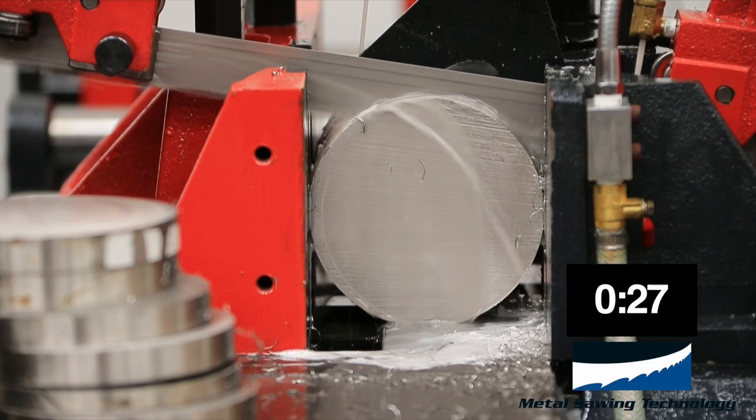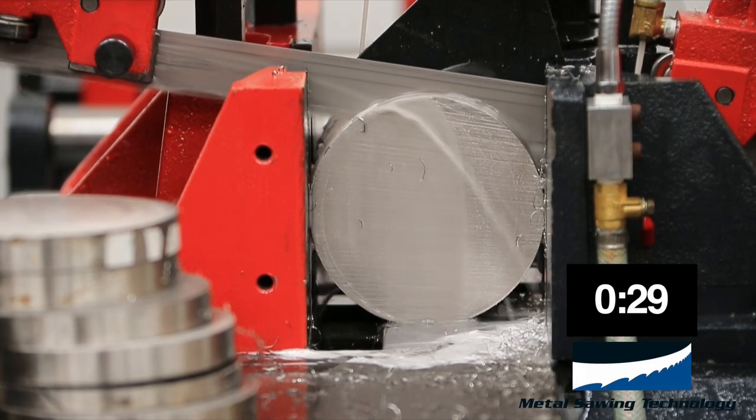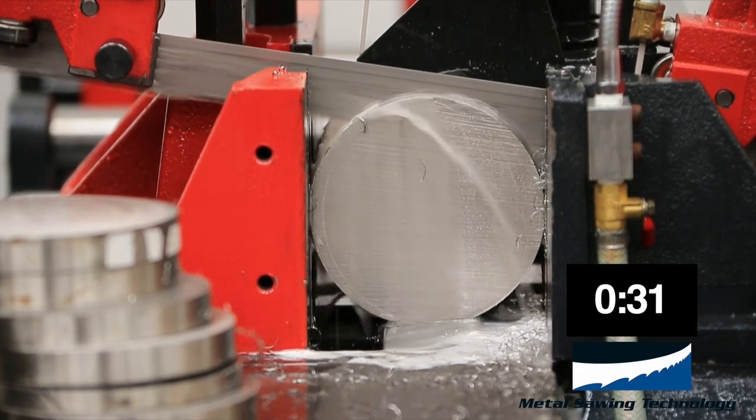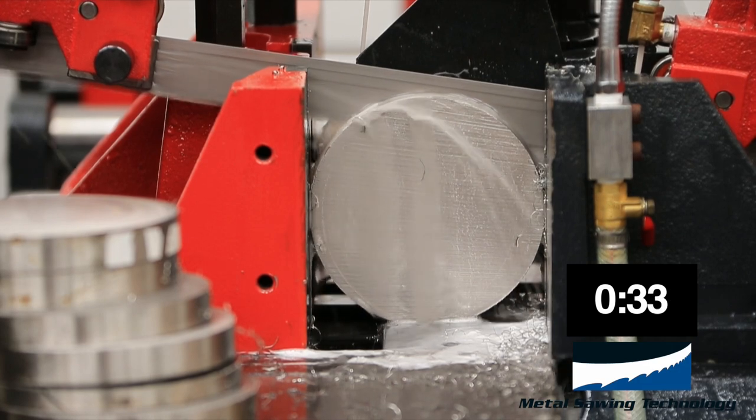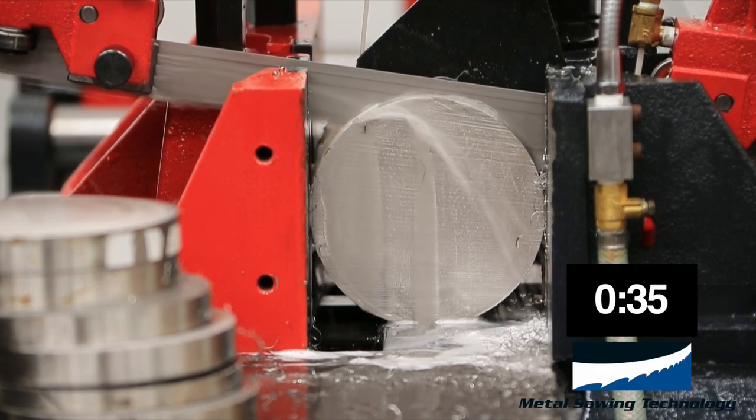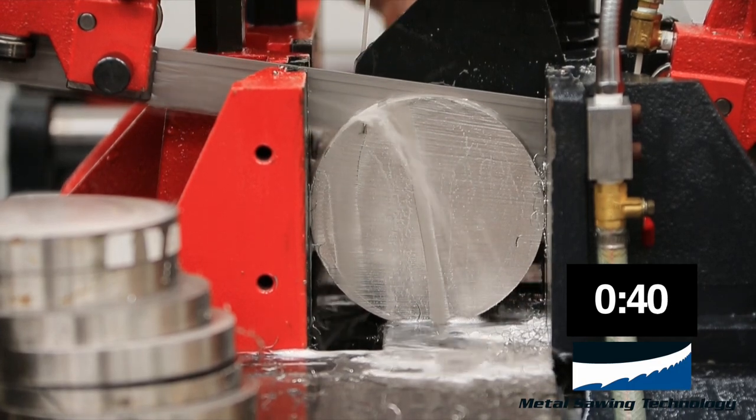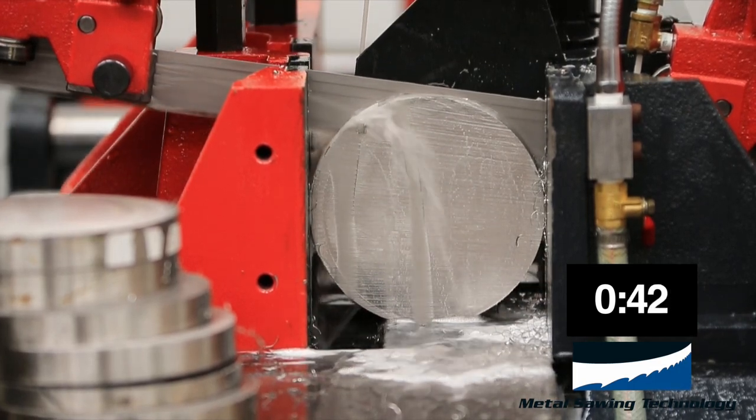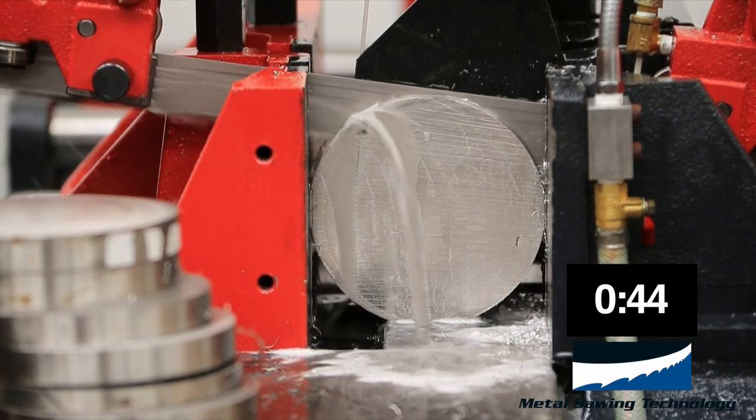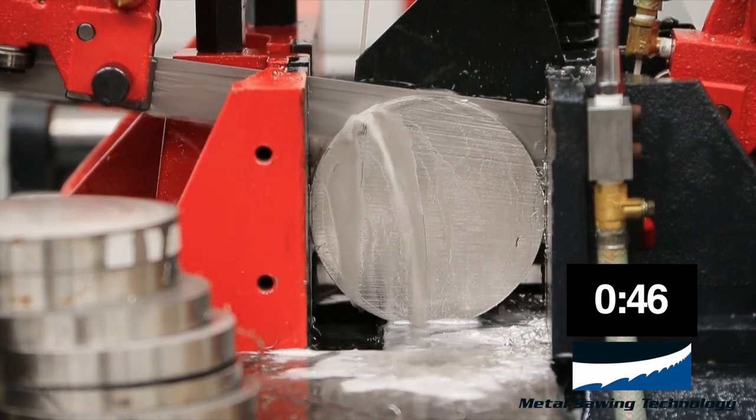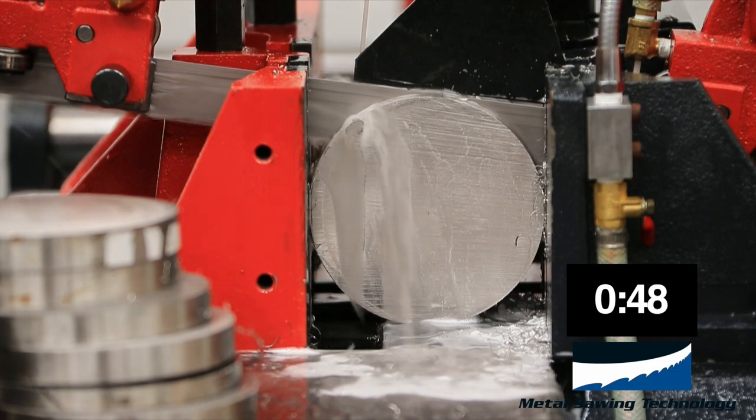Typically on a carbide tip band saw blade, you run the band speed 20% faster than a regular bi-metal blade depending on your application and your type of material. Typically with a standard blade on stainless steel, you'll cut one to two square inches per minute. With this band, we're trying to achieve a cut rate of close to five square inches per minute.